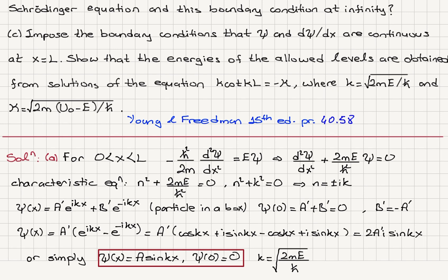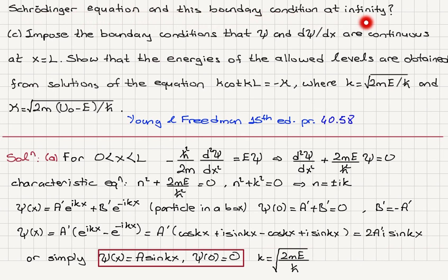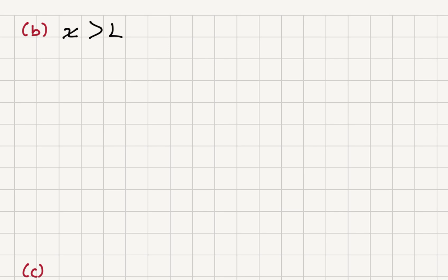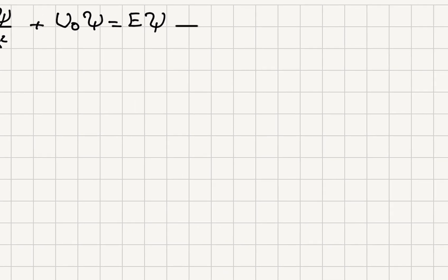Moving on to Part B. The wave function must remain finite as x → ∞. What must be the form of ψ(x) for x > L in order to satisfy both the Schrödinger equation and this boundary condition at infinity? Writing Schrödinger's equation for x > L: −ℏ²/2m · d²ψ/dx² + u₀ψ = Eψ.